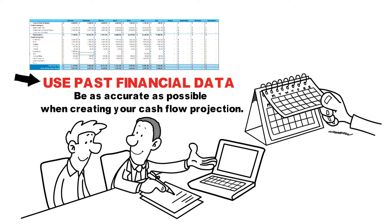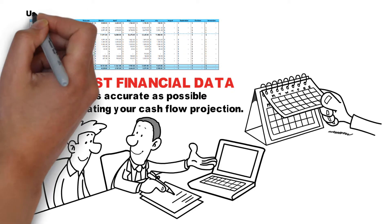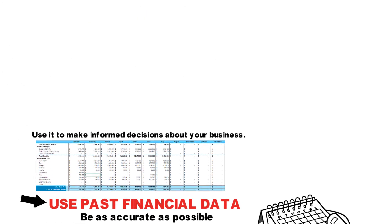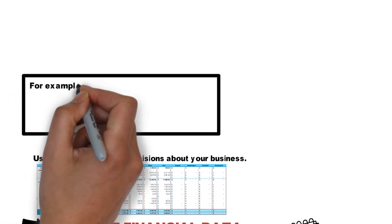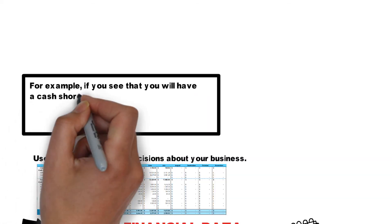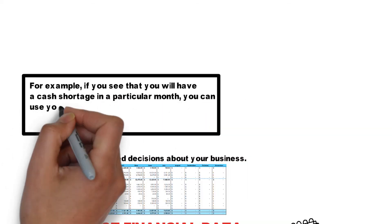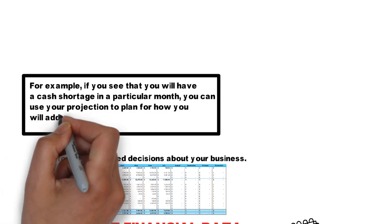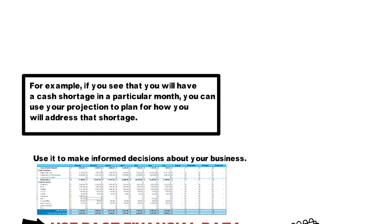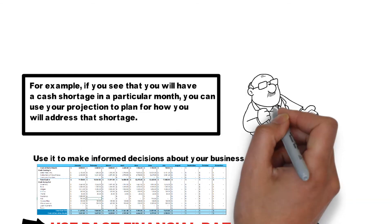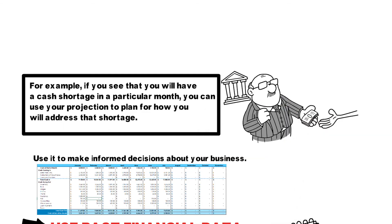Once you have completed your cash flow projection, you can use it to make informed decisions about your business. For example, if you see that you will have a cash shortage in a particular month, you can use your projection to plan for how you will address that shortage. You may need to borrow money or find other sources of funding to cover the shortfall.